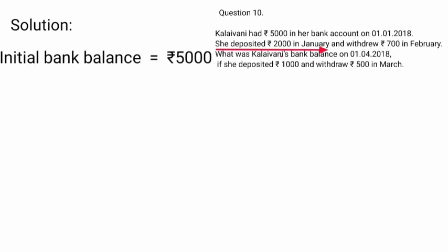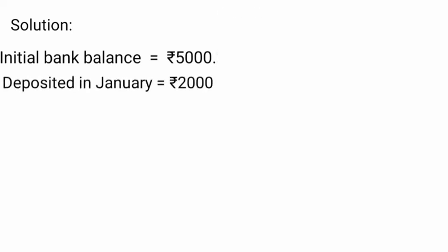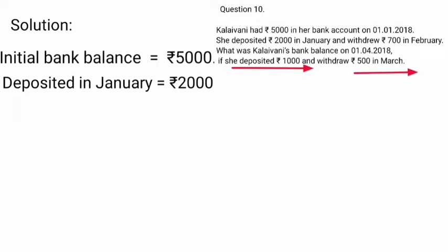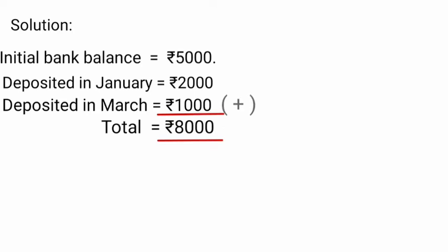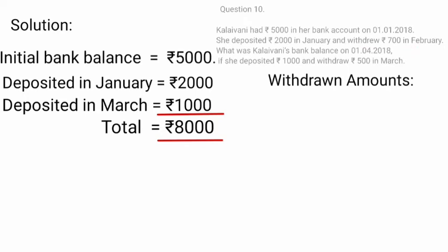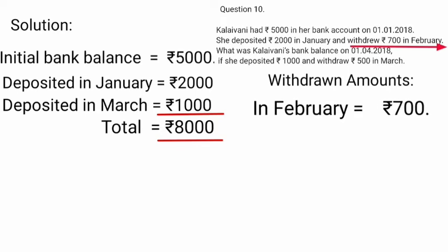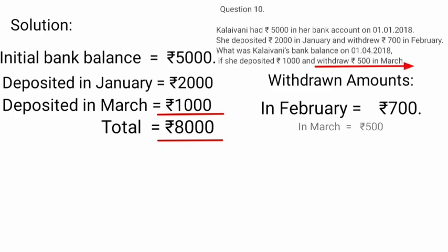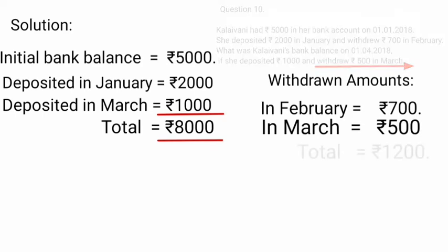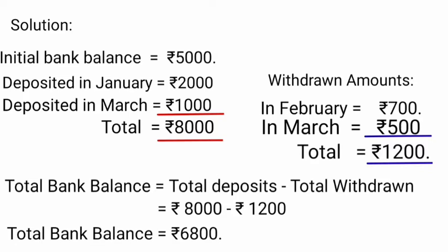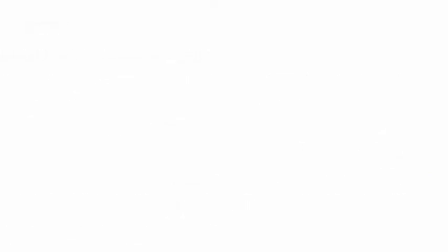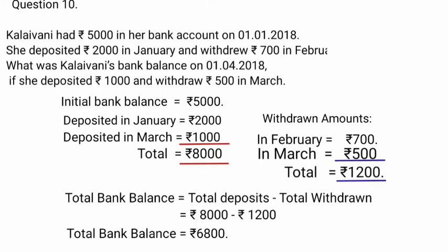The initial bank balance is Rs. 5000. She deposited Rs. 2000 in January and Rs. 1000 in March. Adding all these amounts gives Rs. 8000. The withdrawn amounts are Rs. 700 in February and Rs. 500 in March; adding these gives Rs. 1200. Therefore, total bank balance equals total deposits minus total withdrawn: Rs. 8000 minus Rs. 1200 equals Rs. 6800.